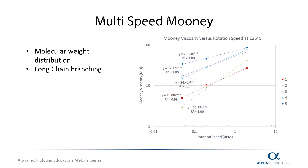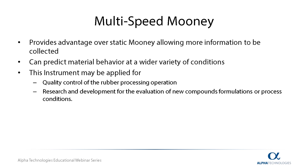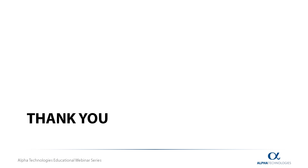In conclusion, a multi-speed Mooney viscometer provides advantages over a static Mooney, allowing more information to be collected and predicting material behavior at a wider variety of conditions. This instrument may be applied for quality control of the rubber processing operation, as well as research and development for the evaluation of new compounding formulations or process conditions. My name is Rick, an Applications Engineer with Alpha Technologies. Thank you for listening to my webinar, and I hope you found some useful information to help improve your process or research.